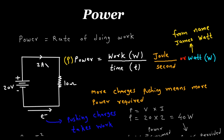Let's understand this from this circuit diagram. Here we can see this is a battery of 20V voltage source. This is a resistance of 10 Ohm. And the current through this is 2 Ampere.